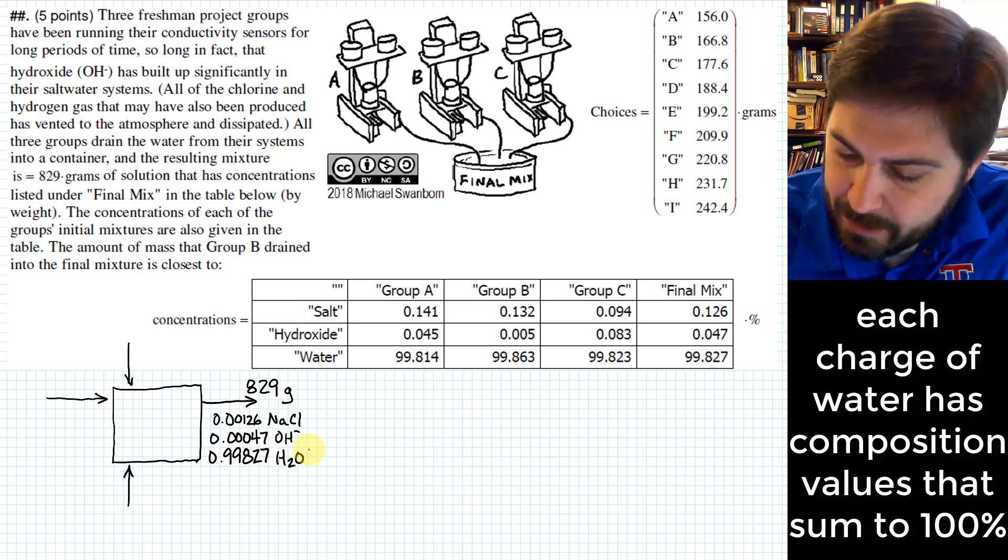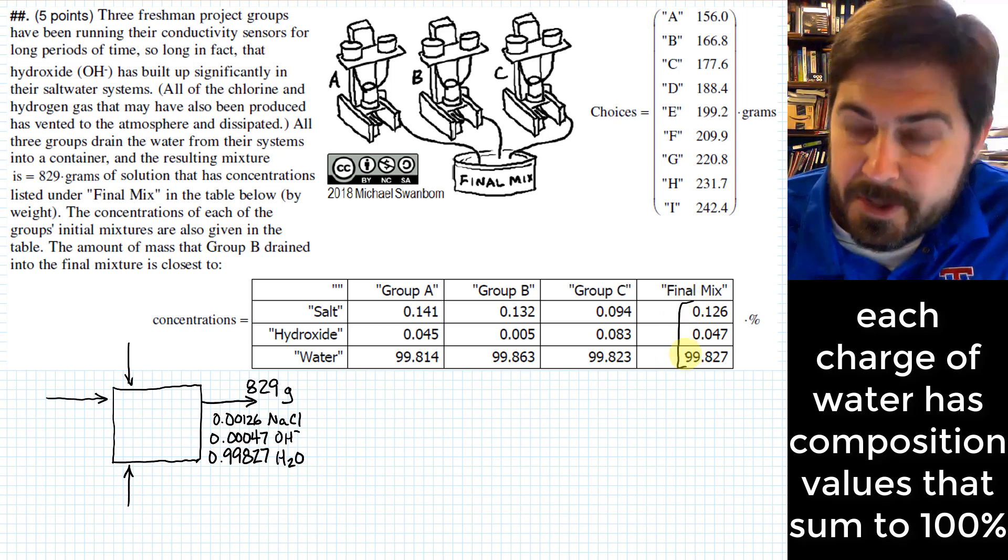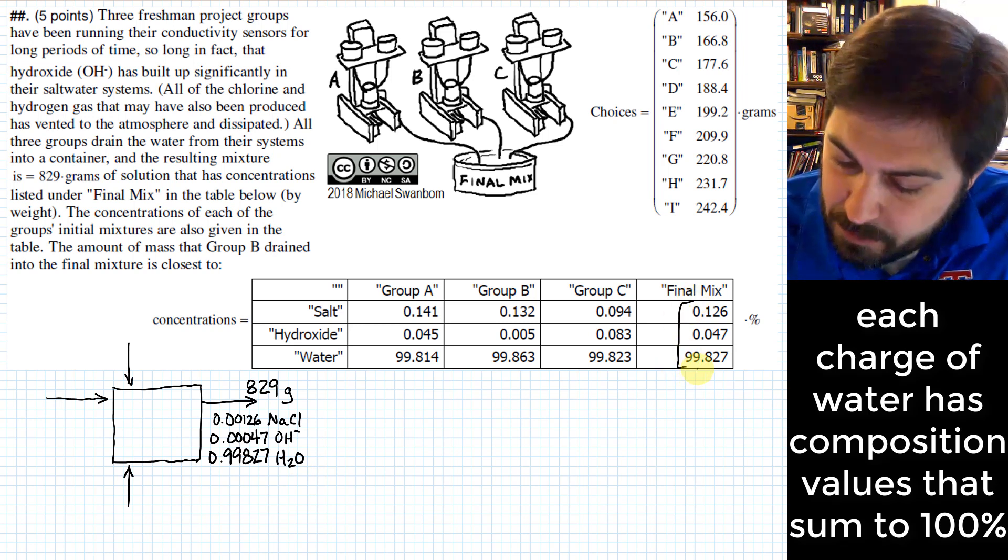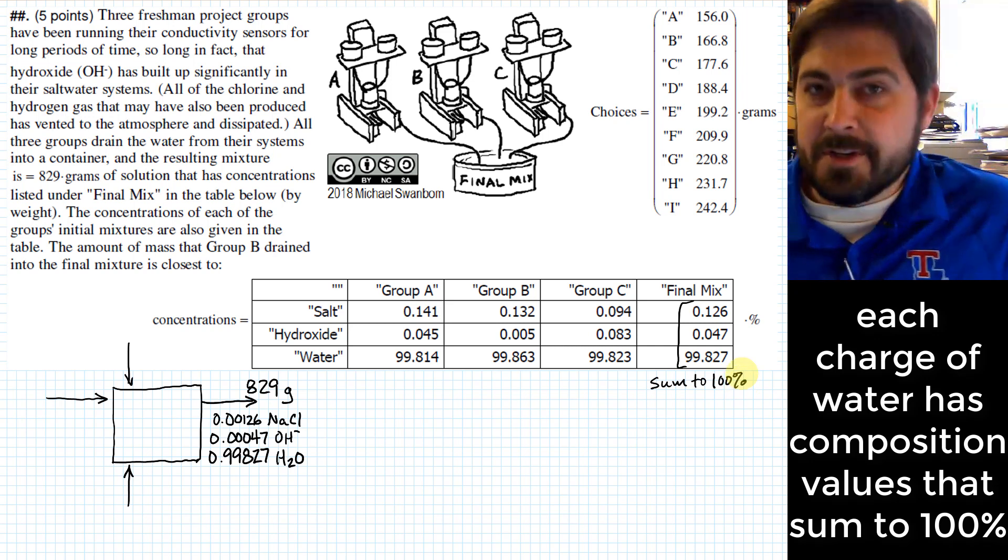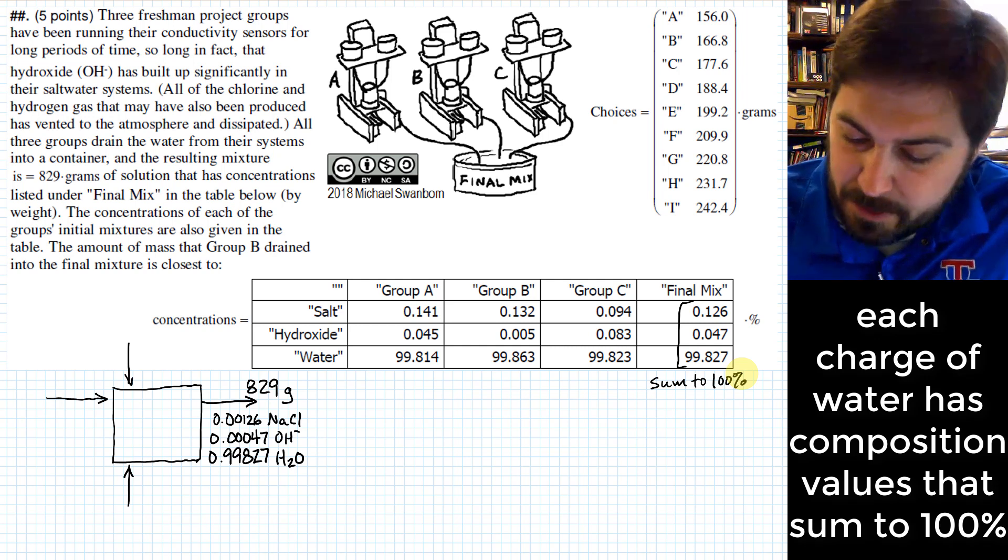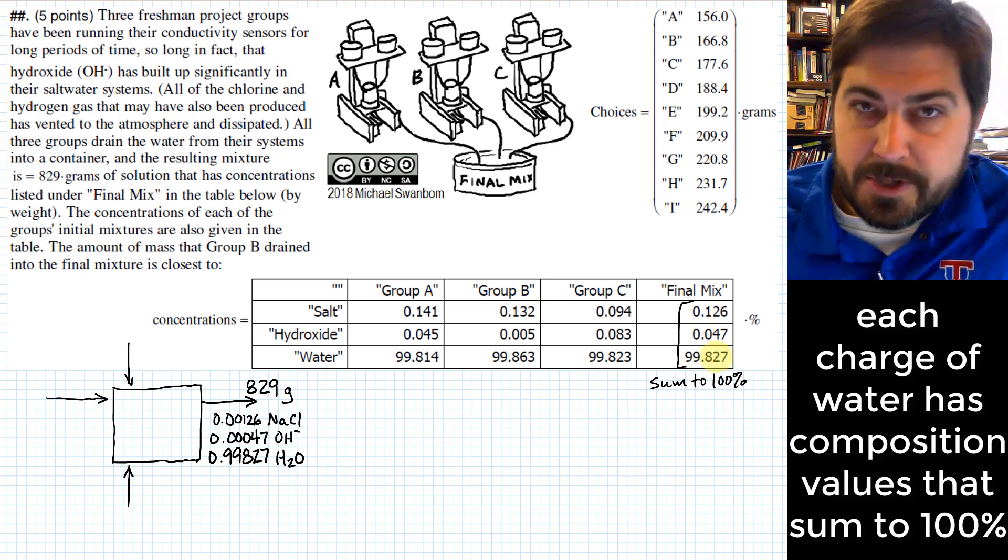Then I want to do 0.99827. Now one thing I want to point out is that, since we know all of these compositions, these should sum to 1 or sum to 100%. And that's kind of been taken care of for us already with the statement of this problem, but I just wanted to mention, if those don't add up to 100%, then we've got something else kind of wrong with the problem. But they do add up to 100%, so we're good.